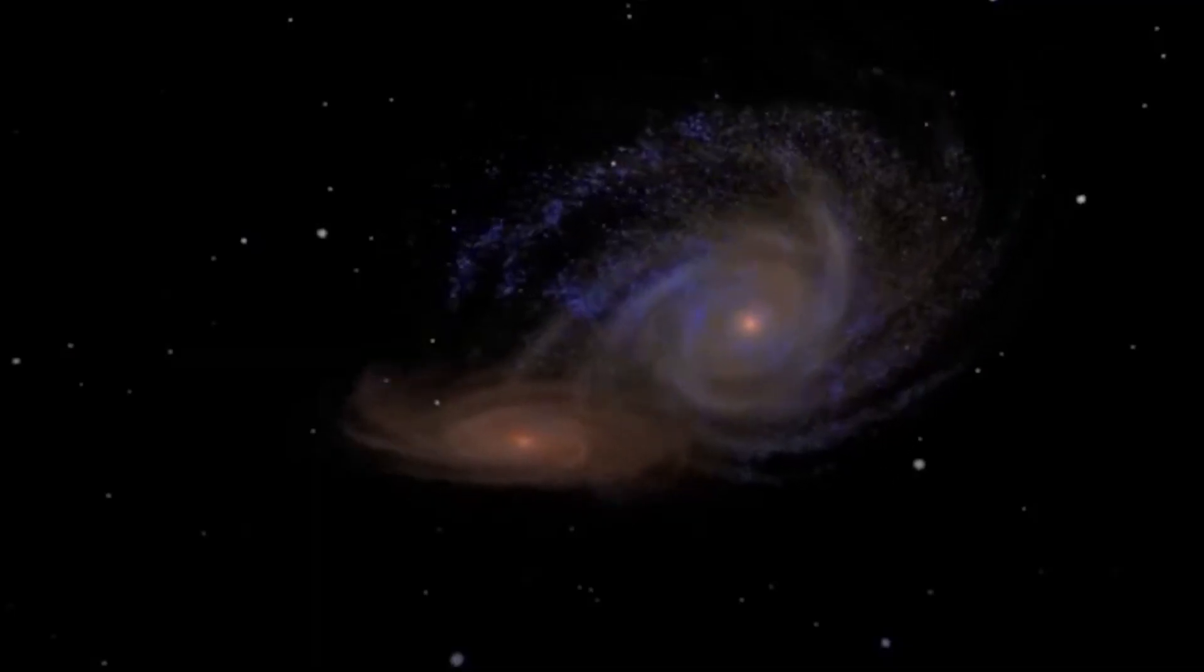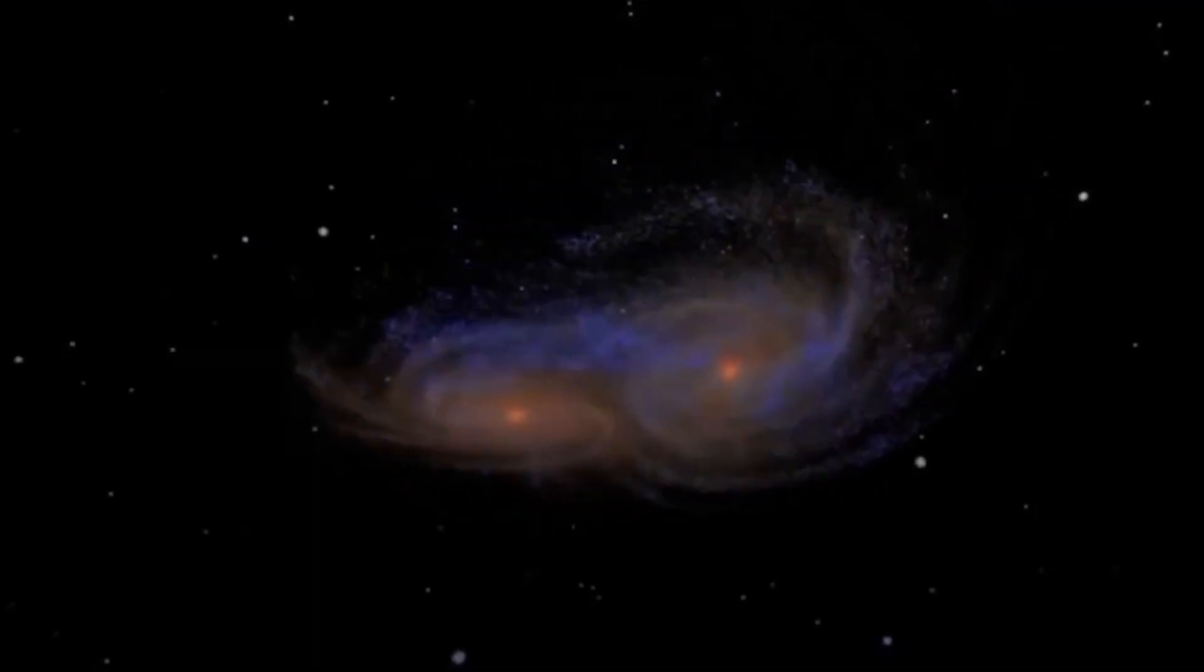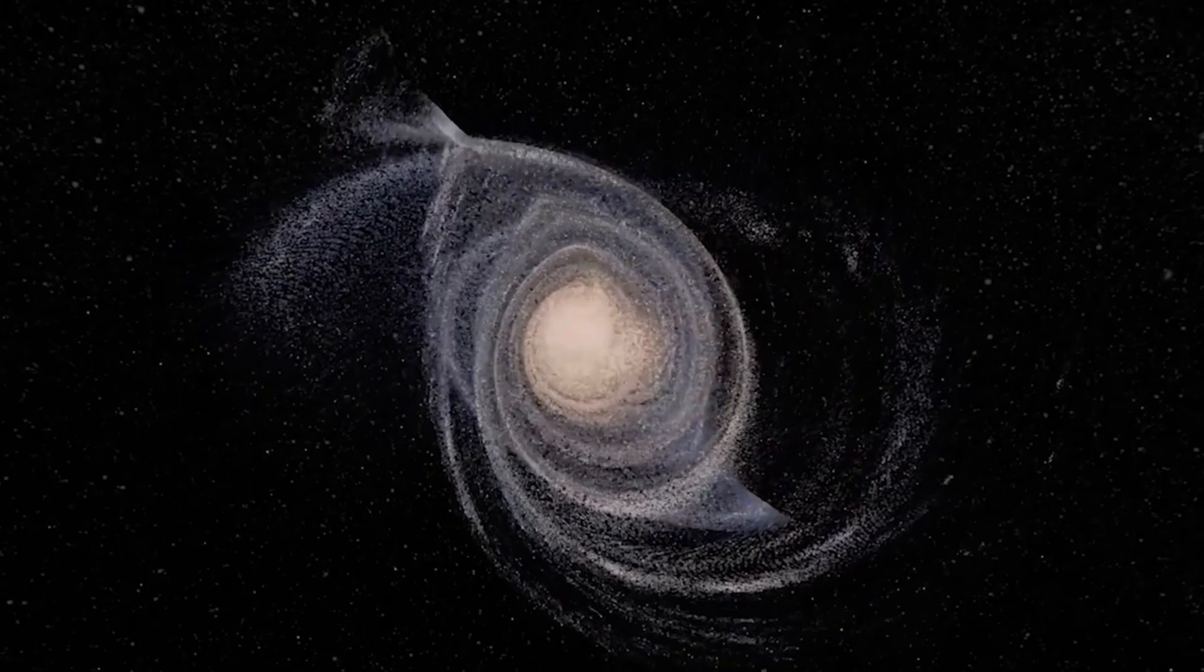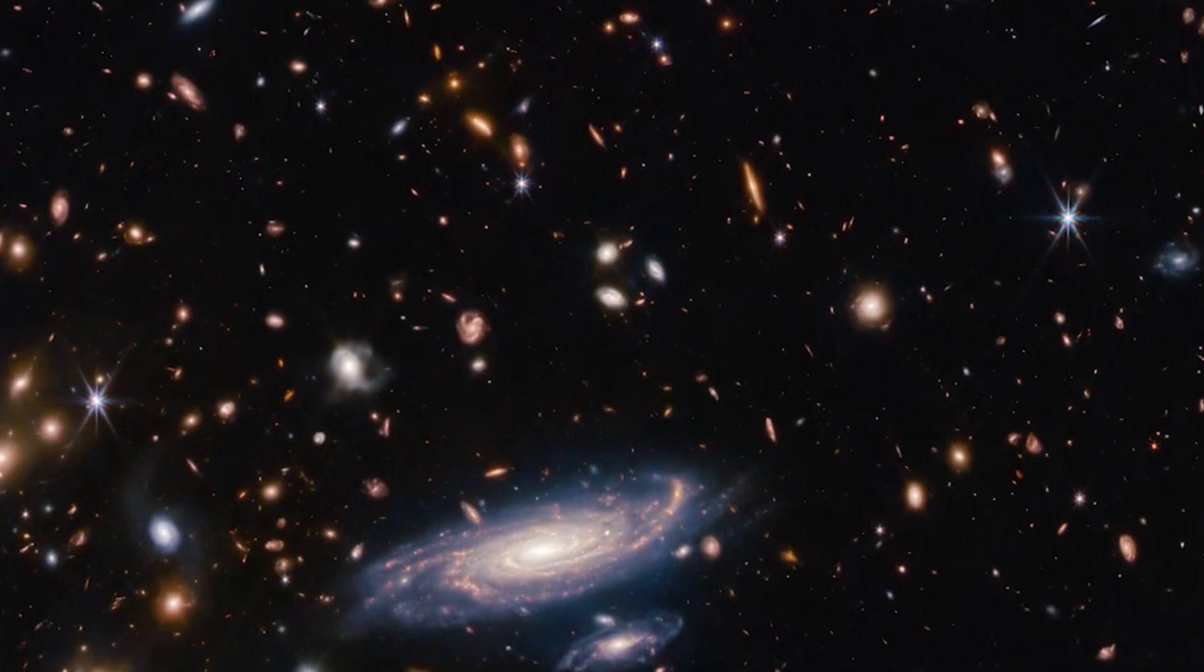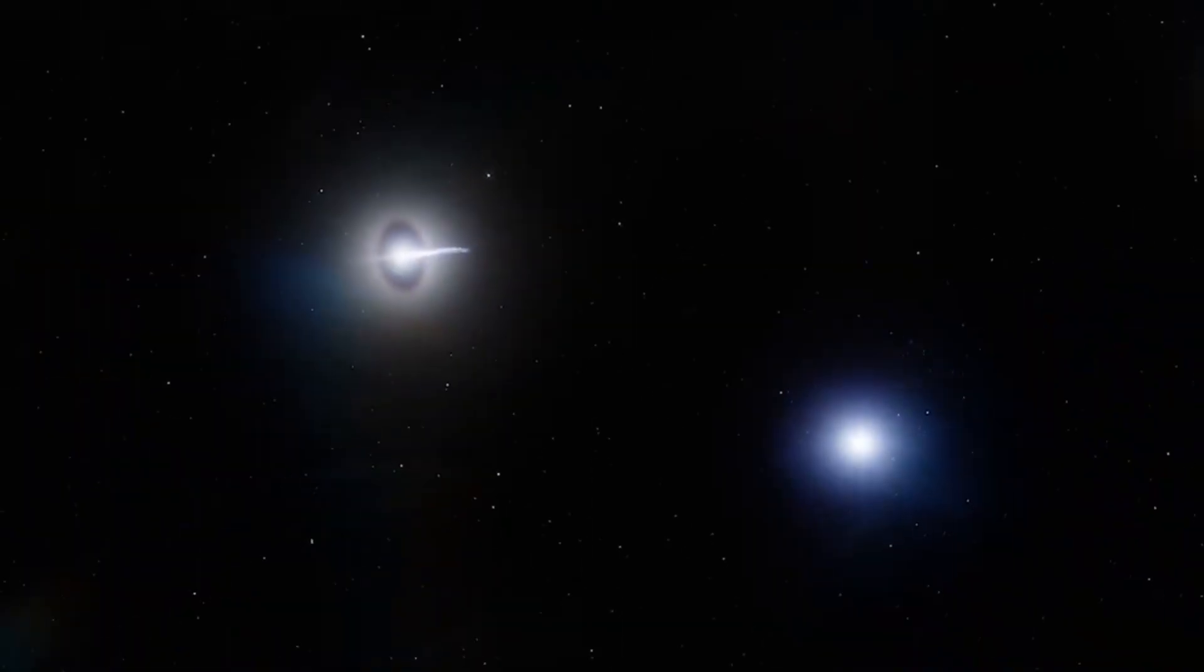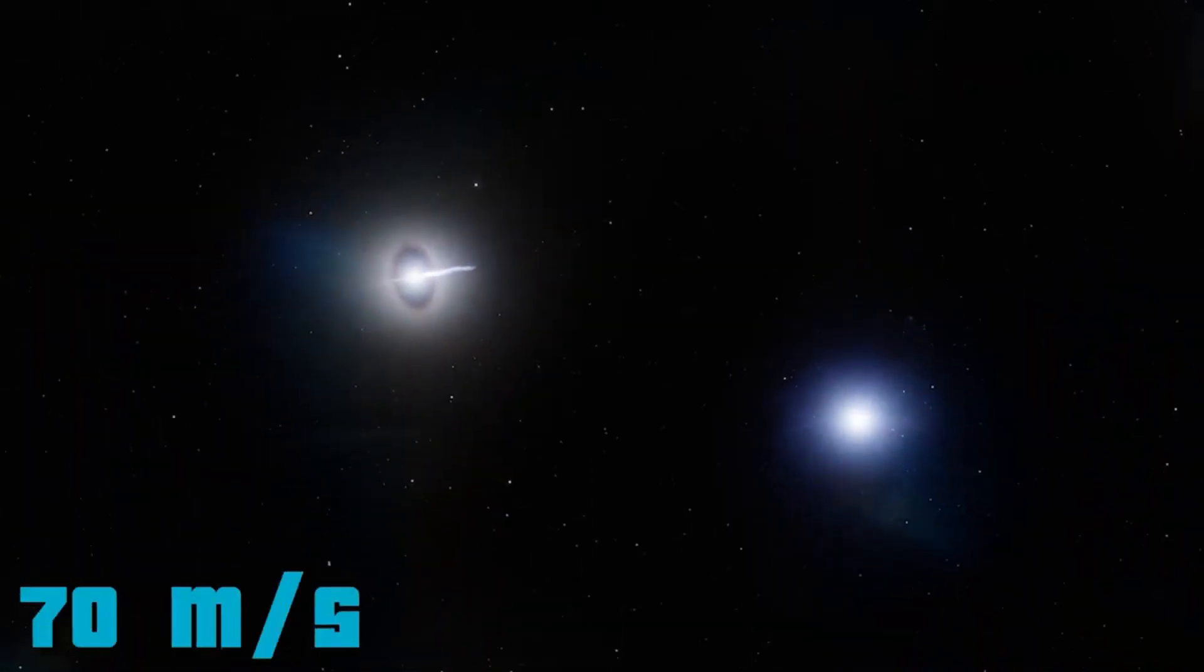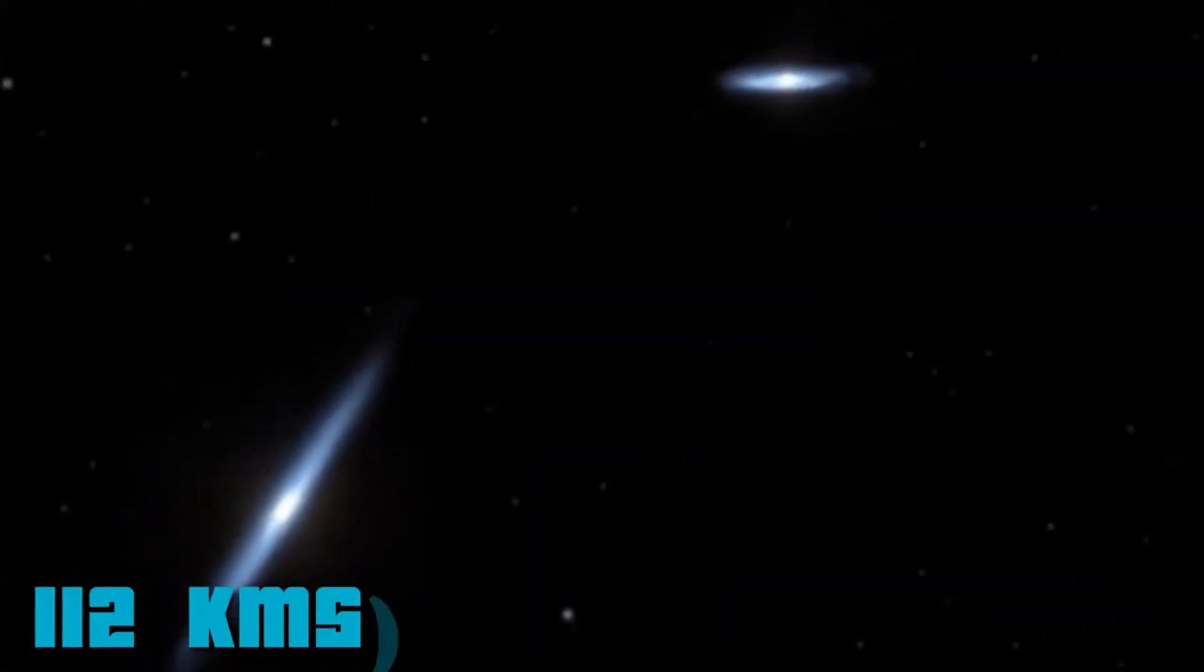The magnetic pull of gravity between Andromeda and the Milky Way is powerful and compelling, steadily drawing them nearer to each other. Present observations suggest they're hurtling toward one another at an impressive speed of approximately 70 miles per second, or 112 kilometers per second.